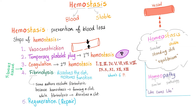Hemostasis — hemo means blood, stasis means stable — is prevention of blood loss or stopping bleeding. Steps of hemostasis: vasoconstriction, temporary platelet plug also known as primary hemostasis thanks to platelets, coagulation also known as secondary hemostasis thanks to coagulation factors, fibrinolysis to dissolve the clot and restore normal blood flow, then regenerate and repair the tissue.